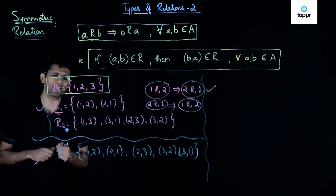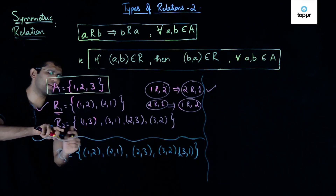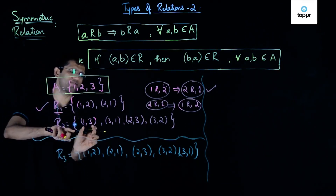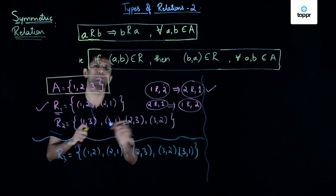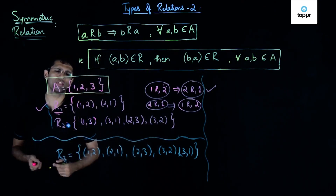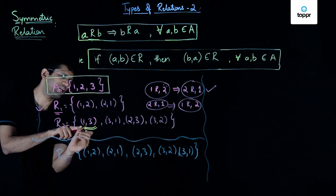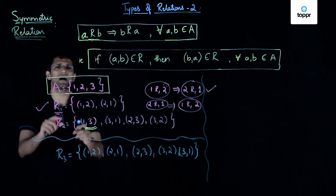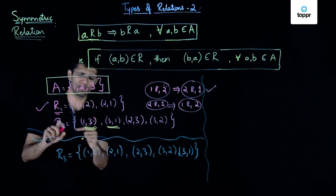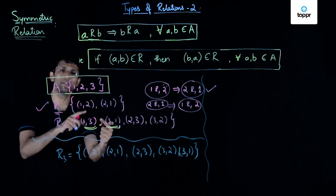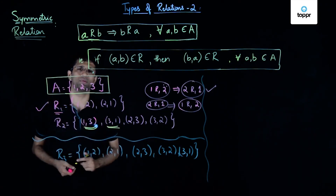Looking at another example, relation R2 contains the ordered pairs (1, 3), (3, 1), (2, 3), and (3, 2). If (1, 3) is a part of relation R2, then that should imply (3, 1) is also in R2, which is true in this case because both (1, 3) and (3, 1) belong to R2. Going in the reverse direction, if (3, 1) belongs to R2, then (1, 3) also belongs to R2, which is also the case.